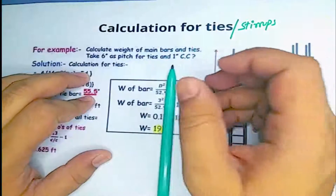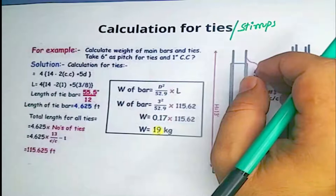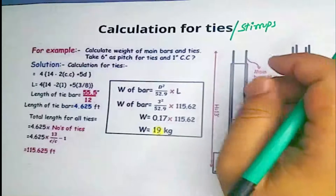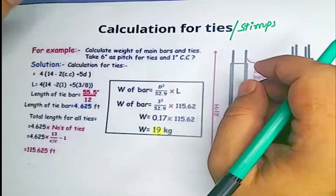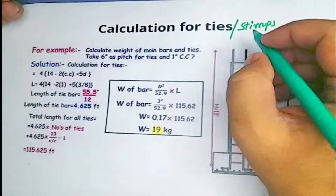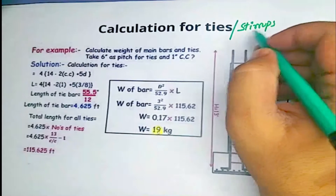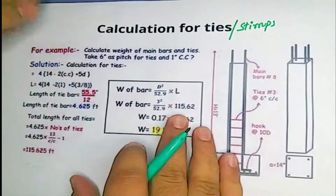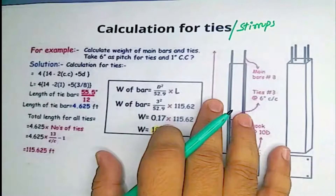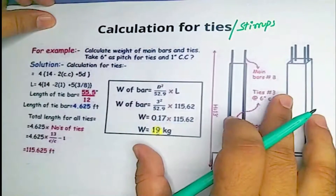Dear viewers, welcome back to my YouTube channel Practical Seven Engineers. Today I am going to show you the most easiest form for calculation of steel bars, as well as the length of ties (stirrups), the total number of stirrups, and the total weight of stirrups. This example was specially prepared on the request of some of my students.